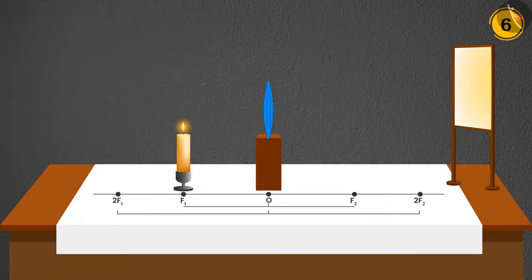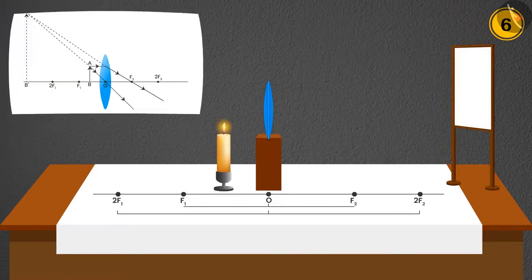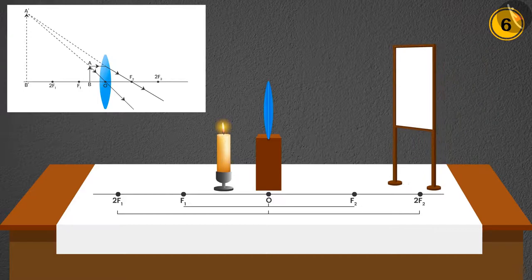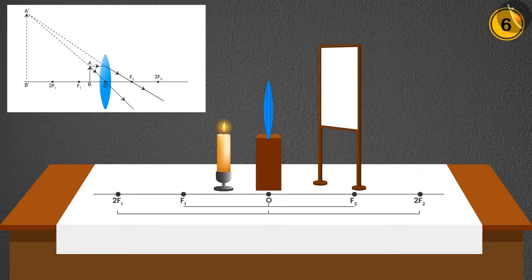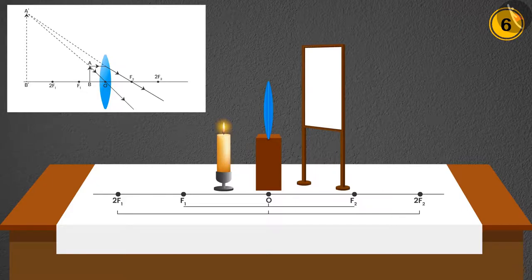Case 6: In the last case, if the candle is placed between F1 and O, then the image will not be visible on the screen. But it will appear that it is forming somewhere on the same side of the lens as the object. Size will remain large and nature will be virtual and erect.